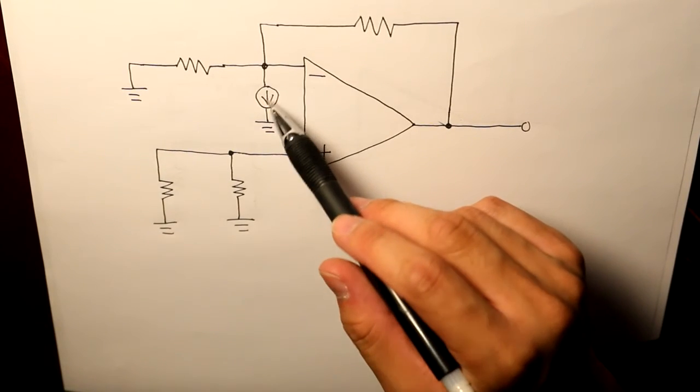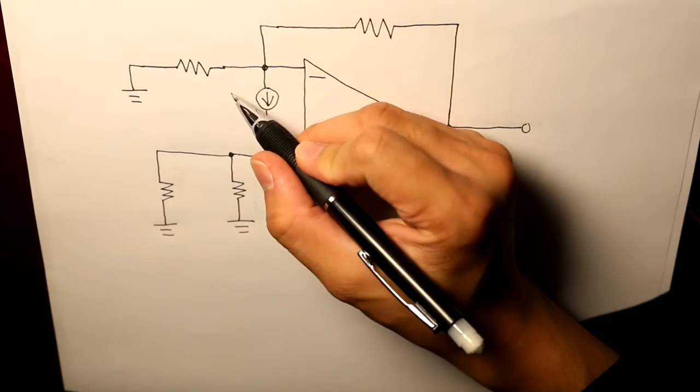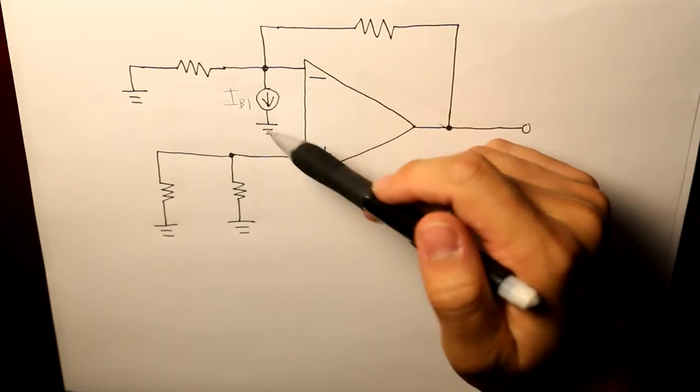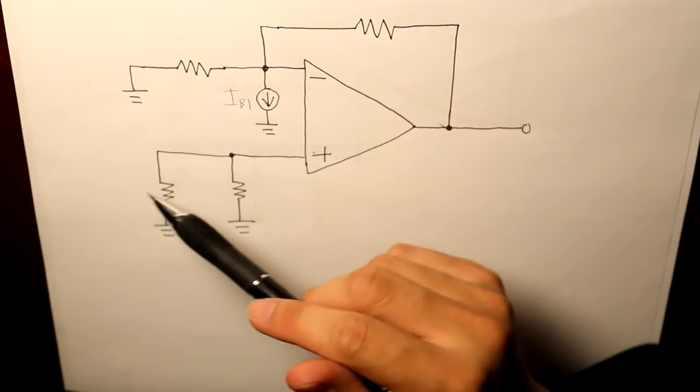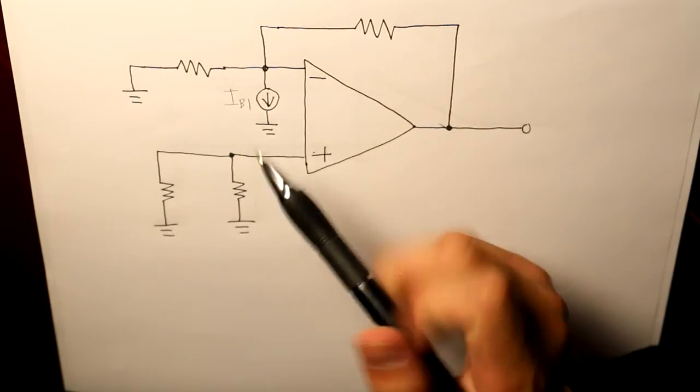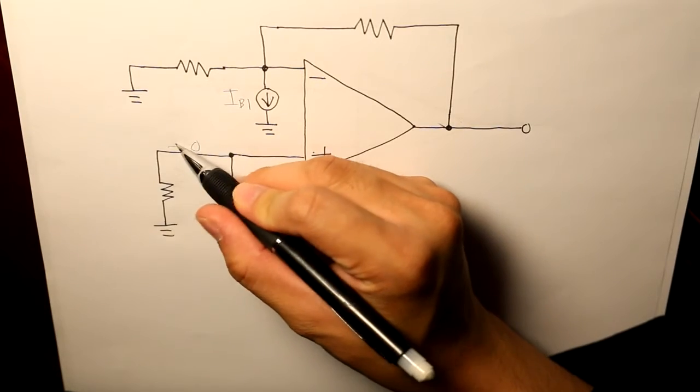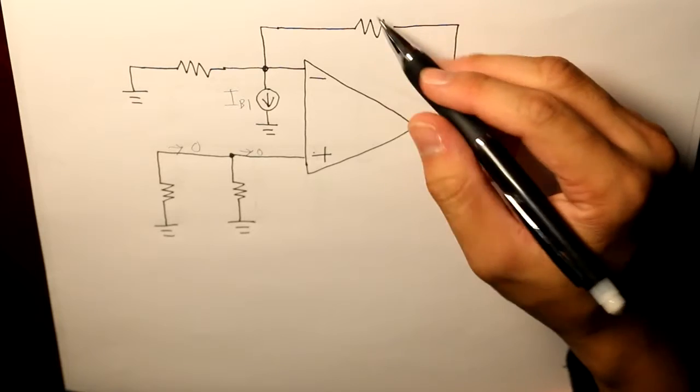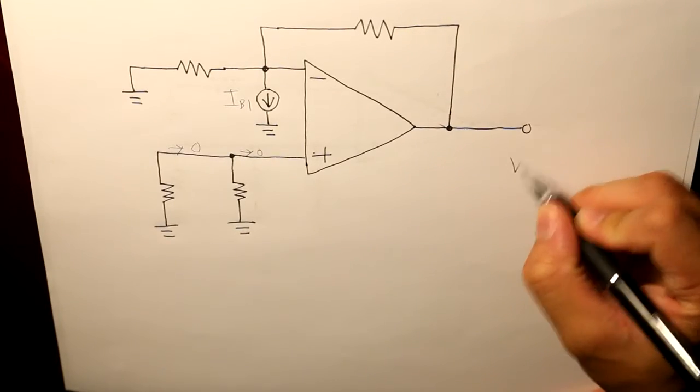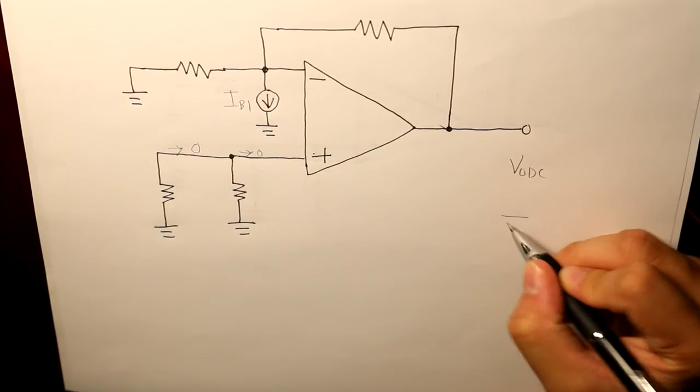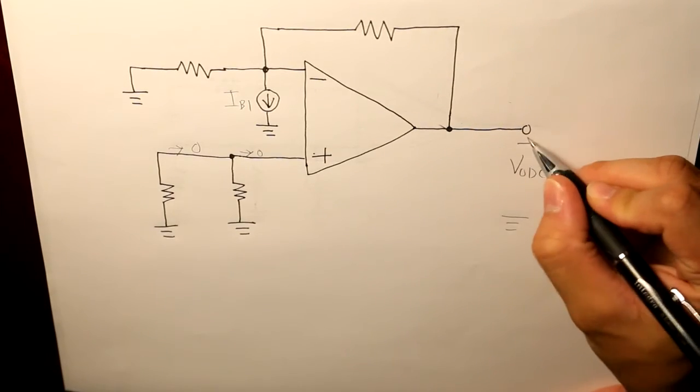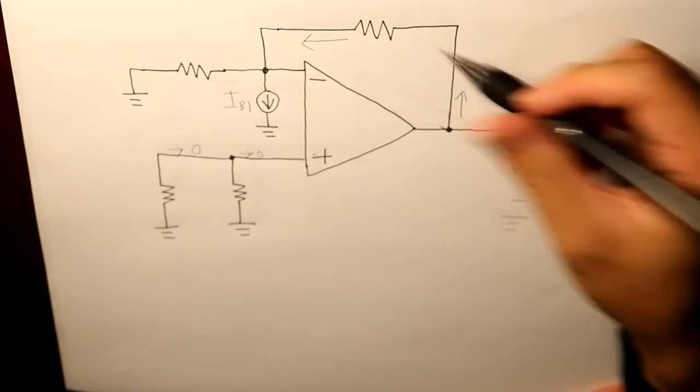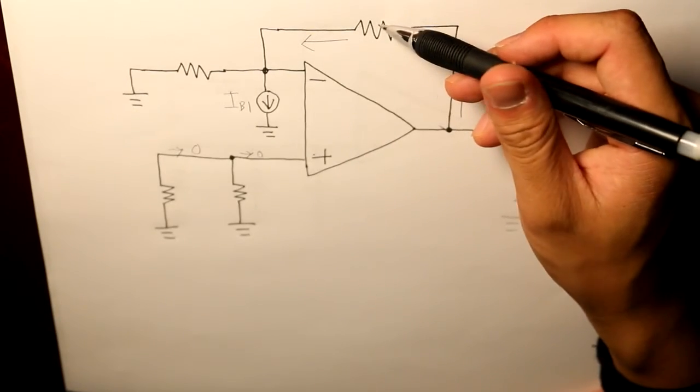So if we have a current source like this, and we can label this as IB1, so this basically indicates there's a bias current, and also there's going to be no current flowing here. And there's going to be a current flowing from the output voltage again of the DC, very much like this. So the whole current flows through this feedback resistor.